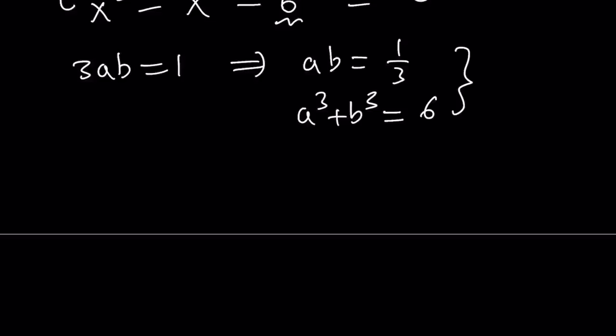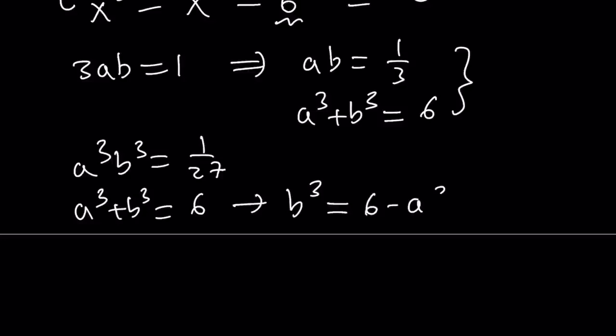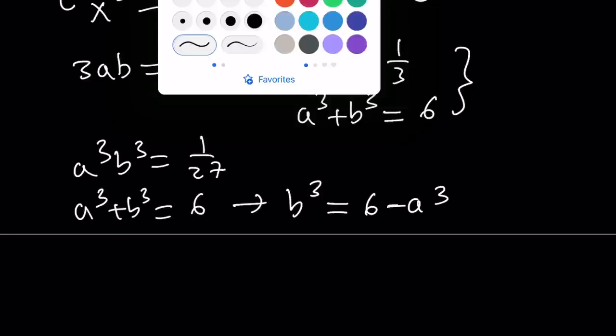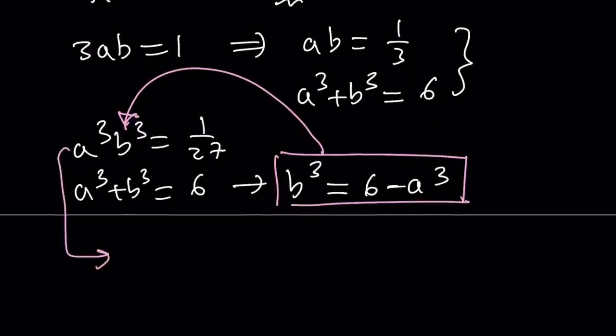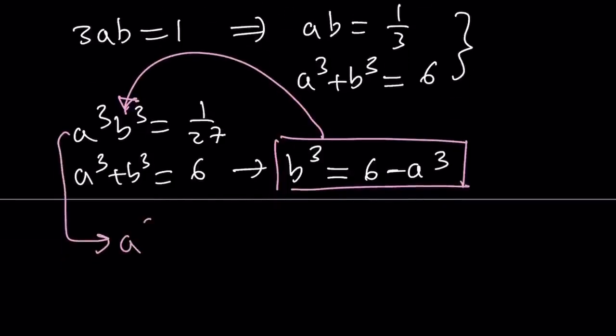Now, if I cube both sides in the first equation, I get a cubed b cubed equals 1 over 27. And, then, the second equation stays as is. Now, notice that I can isolate from one of the equations. I can isolate b cubed and write it as 6 minus a cubed. So, this is going to be critical in solving our system. So, let's go ahead and substitute that here. And, we're going to get a quadratic equation from here.